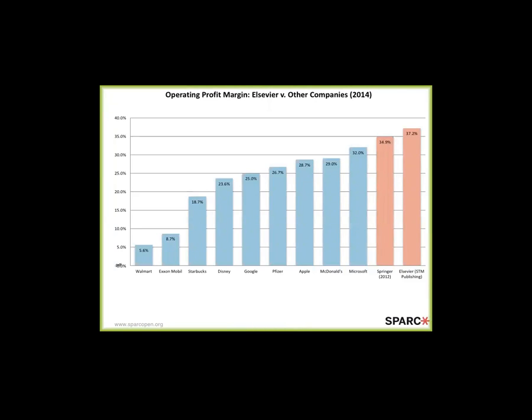When we look at average profit margins across industries — Disney, Google, Apple, Microsoft, ExxonMobil — you can see that commercial publishers throw off profits that exceed these commercial companies. And when you think about the supply chain for the materials they're actually making money off of, we're contributing that material for free, so it's all upside for publishers.